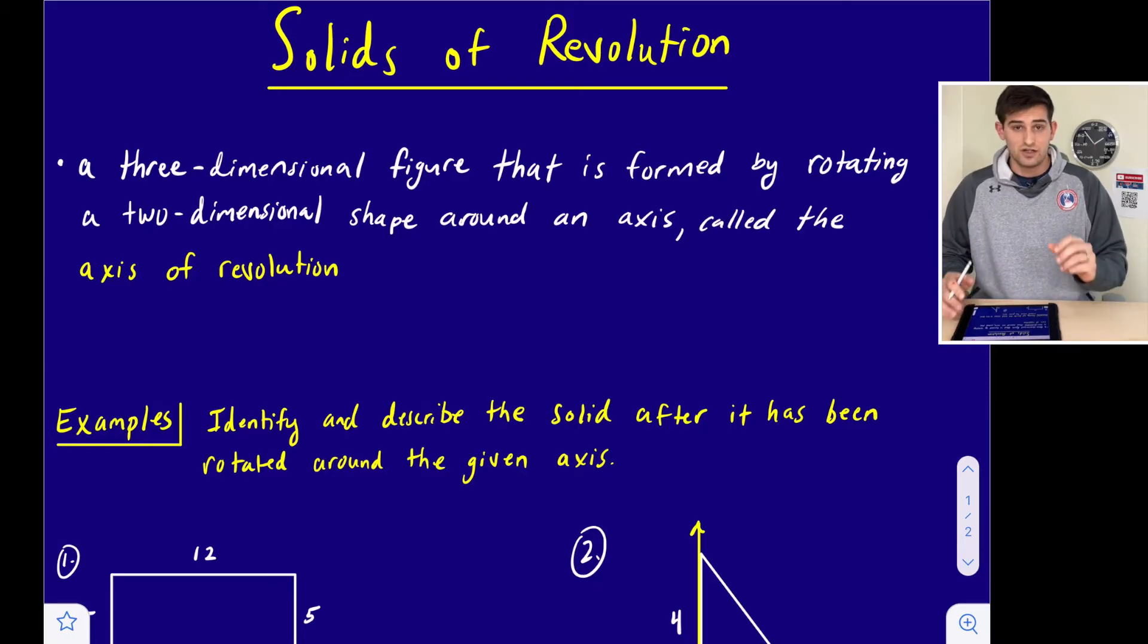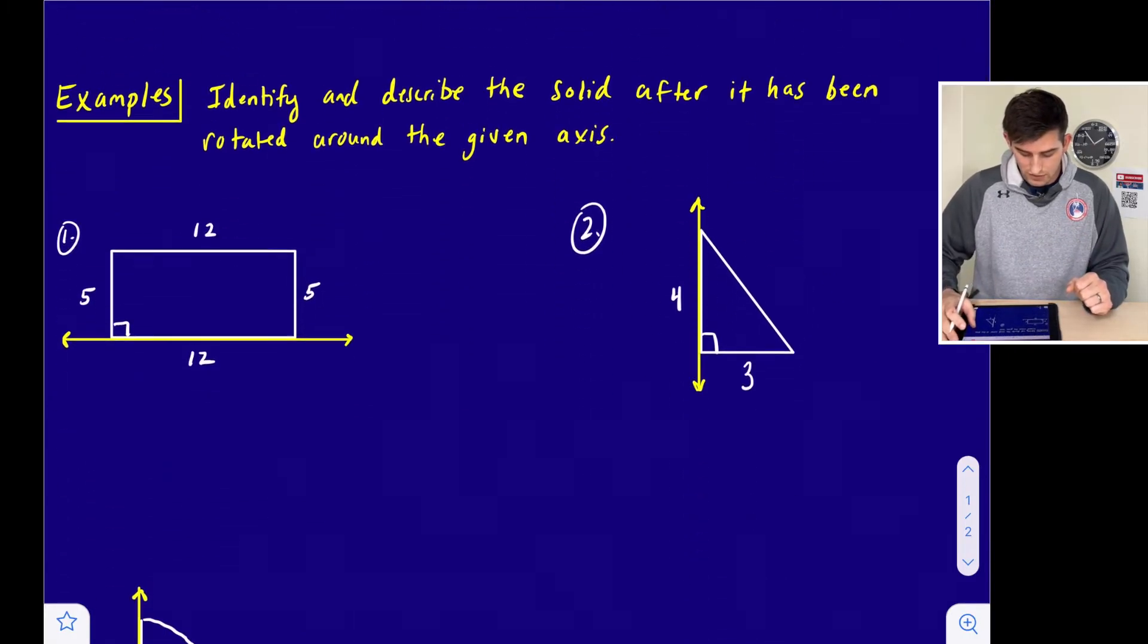Essentially we're starting with a two-dimensional shape. We have some kind of axis that we are rotating around, and if we can picture this rotation taking place and the original shape going around this axis and connecting back to the original shape, it's going to form a three-dimensional solid. Let's take a look at a couple examples here.